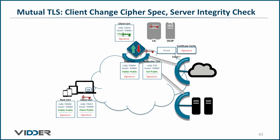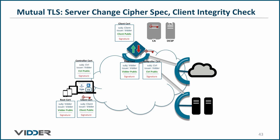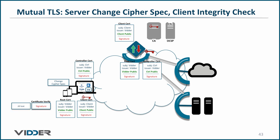The controller decrypts the hash and compares it to its version of the text that has been sent and received to make sure the integrity of the message has not been compromised. And finally, the server is ready to convert to encrypted communications, so it sends its ChangeCipherSpec message to the client and gathers up all the text and signs it and sends it to the client, which verifies it, and at that point, the mutual TLS connection has been established.